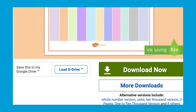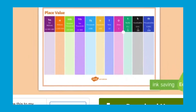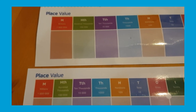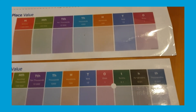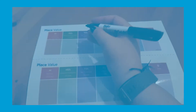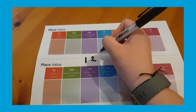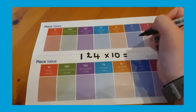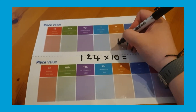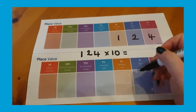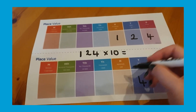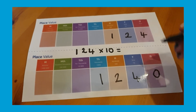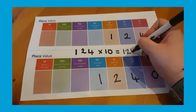Place value grids are a very useful tool when multiplying and dividing by 10, 100, and 1000, as it's easy to see the digits moving left and right across the grid. This place value grid is laminated so I can use a whiteboard pen and rub out my questions and answers — putting the question in the top grid and the digits, once moved, in the bottom grid.